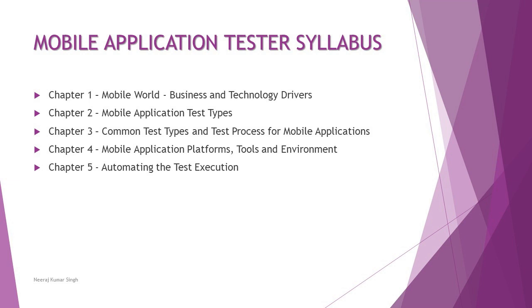Chapter Four covers mobile application platforms, tools, and environment. As a specialized discipline, it requires different platforms and tools — emulators, simulators, and more — along with understanding what configuration and tools you can use in your premises or may need to rent. Chapter Five covers how to automate test executions, discussing tools that support automated execution of mobile application testing. Overall, you will be taught everything from scratch: environment, platform, tools, test types, and test process.